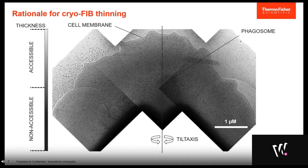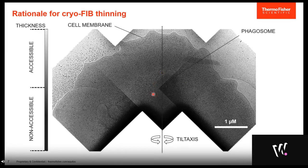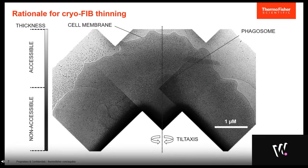Once you have vitrified the cells, you take them to the cryo-TEM. There you would see an image like the one on this slide, showing a cell on the grid with the cell membrane and peripheral regions clearly visible — these are electron-transparent regions. However, as we move toward the center of the cell, for instance near a phagosomal compartment, the signal-to-noise drops significantly. At some point the sample is simply not electron-transparent anymore. That is why we need a focused ion beam instrument first, which can create electron-transparent samples from such thick objects on grids.